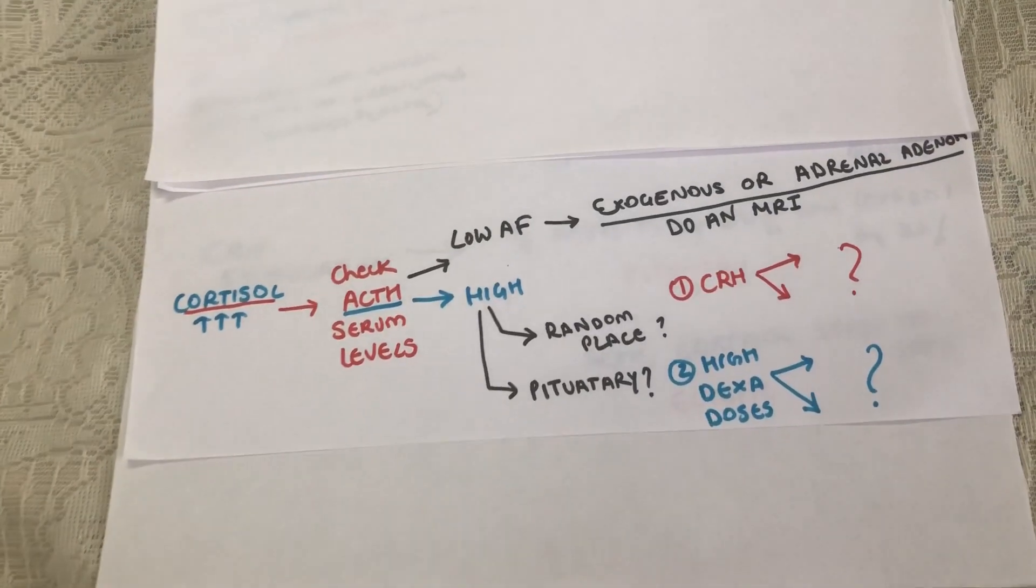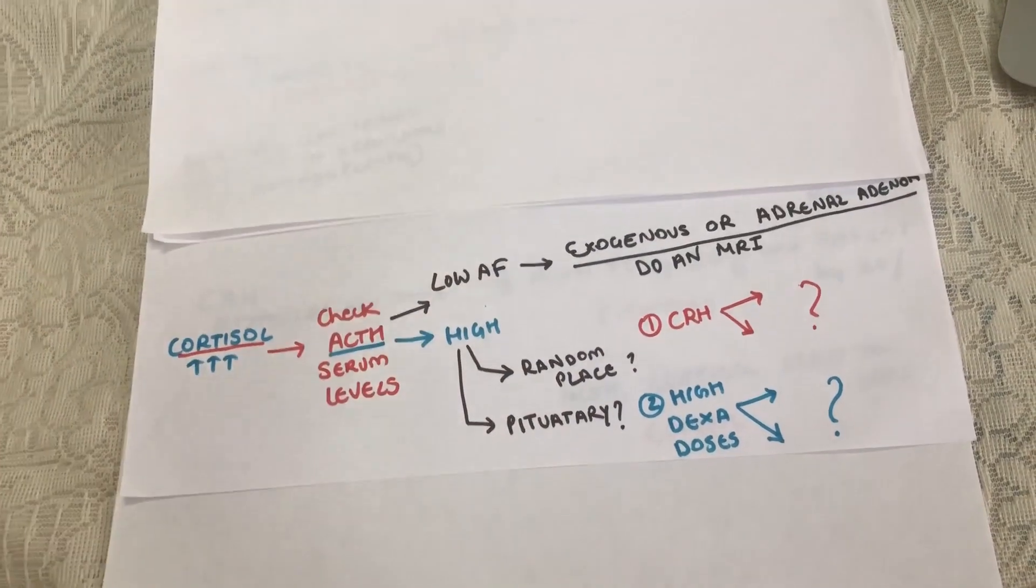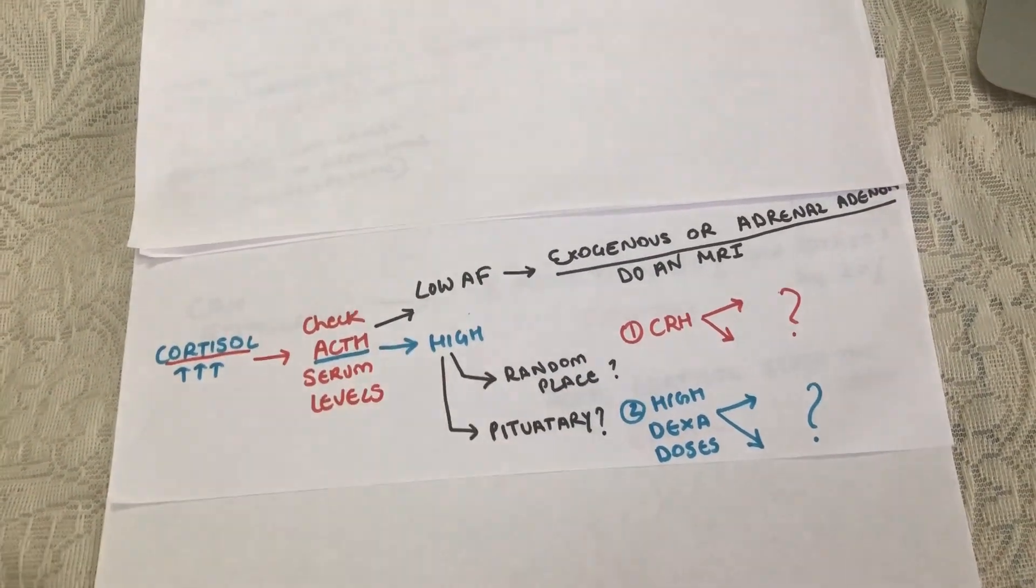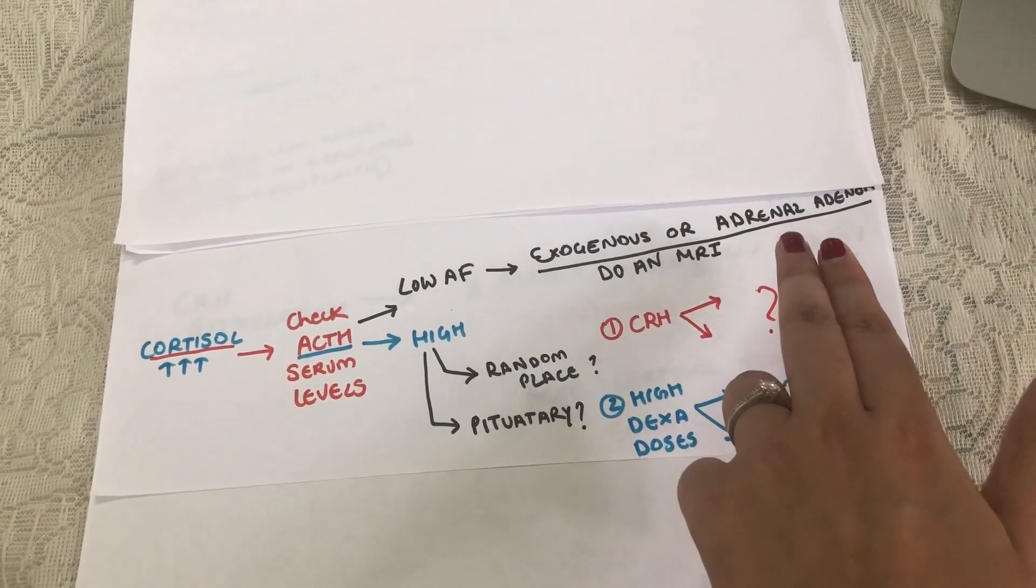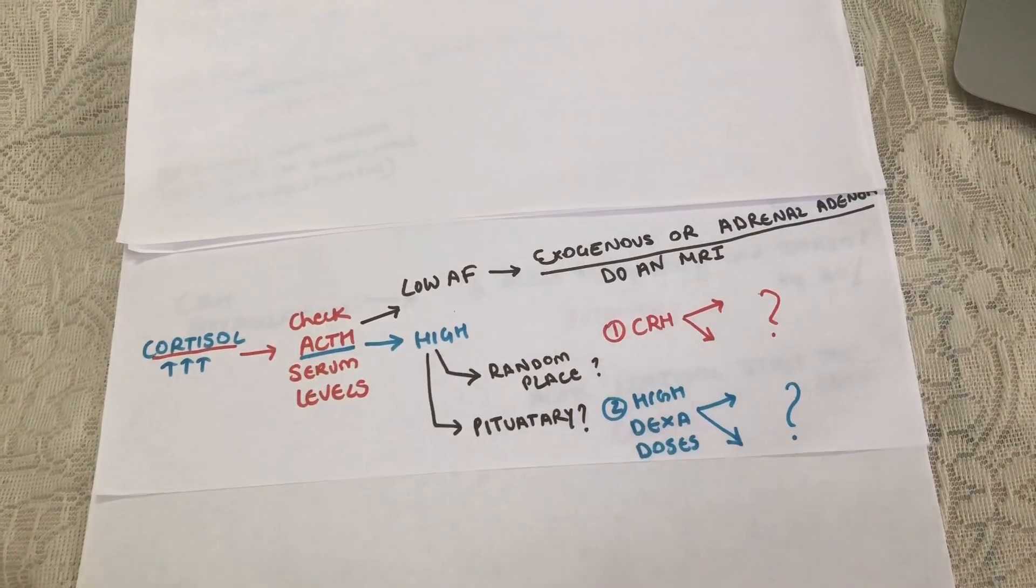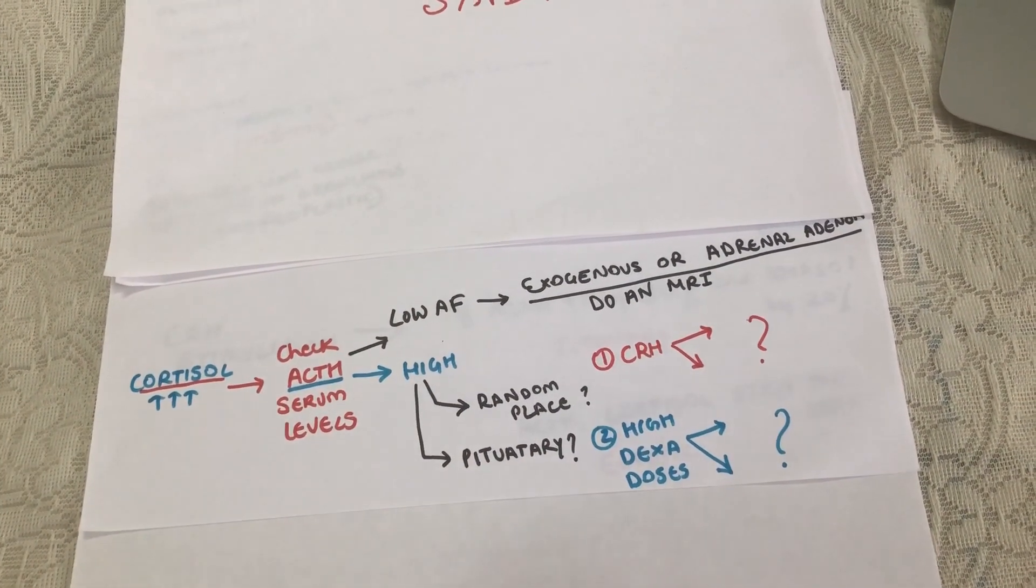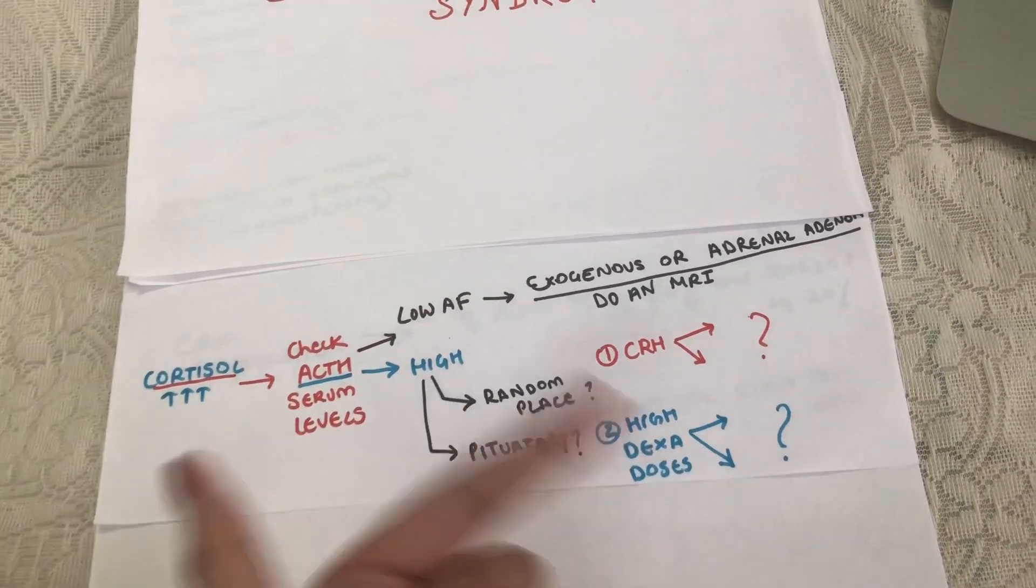The next thing that can happen is that the ACTH levels come back super high, thousands or hundreds. Now you have someone whose cortisol is high and so is the ACTH. It cannot be adrenal because if it were adrenal cortisol, the ACTH would have been suppressed. So this ACTH is being released from either the pituitary or from some random place. We have to figure out which one.